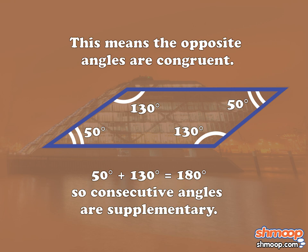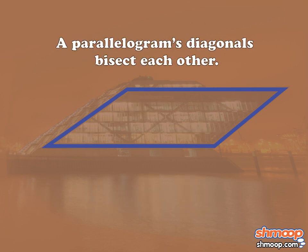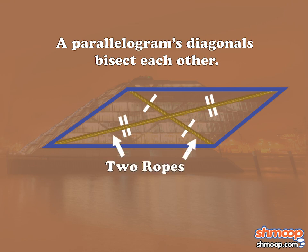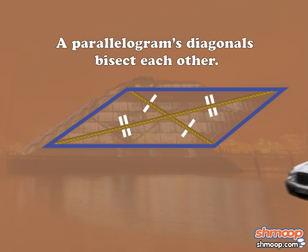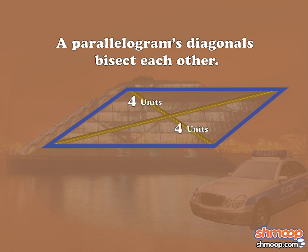We're good on angles, too. As a final check, a parallelogram's diagonals should bisect each other, or divide each other into halves. Now we've rigged two ropes to connect opposite corners, and we hope to measure the bisected halves before the police arrive. So it looks like one of our diagonals is separated into four and four, and the other diagonal is separated into five and five. Looks like they're in halves, or bisected — diagonals that bisect each other.